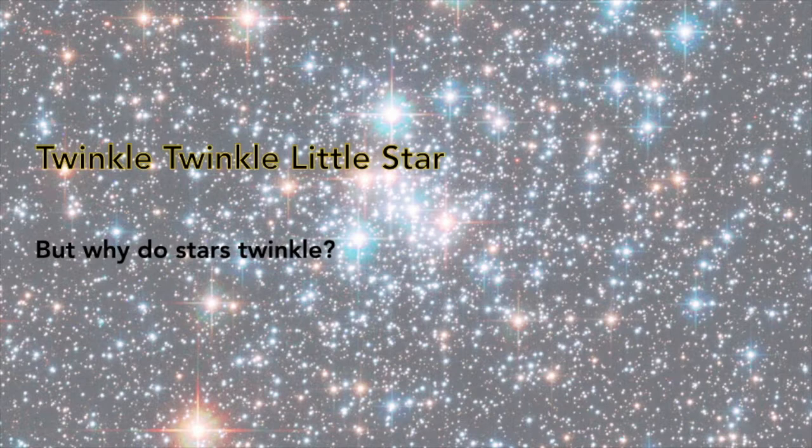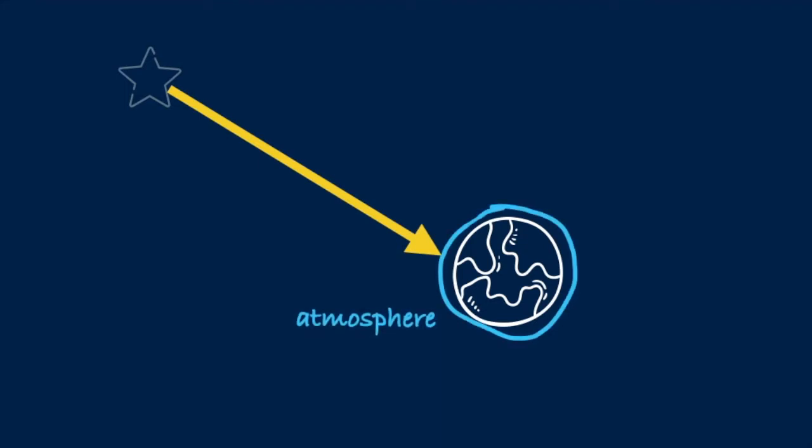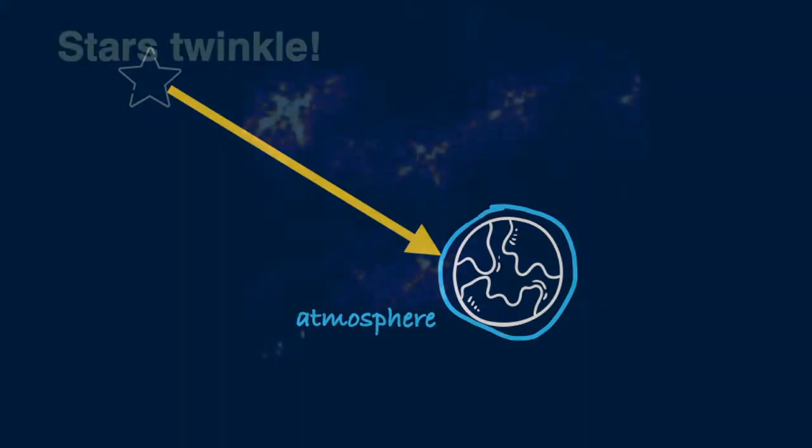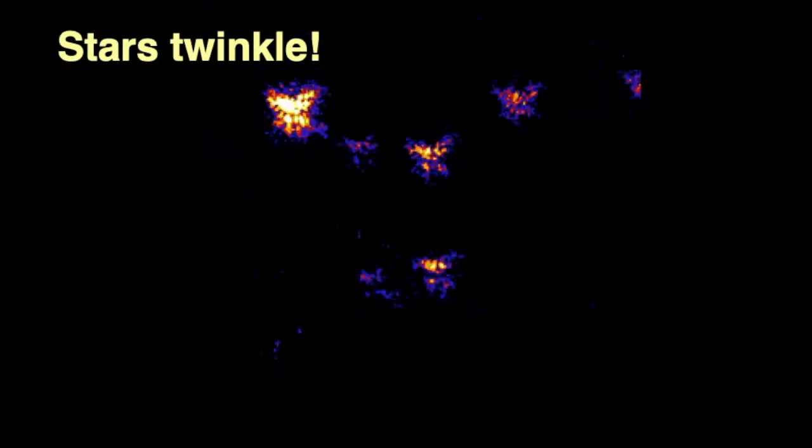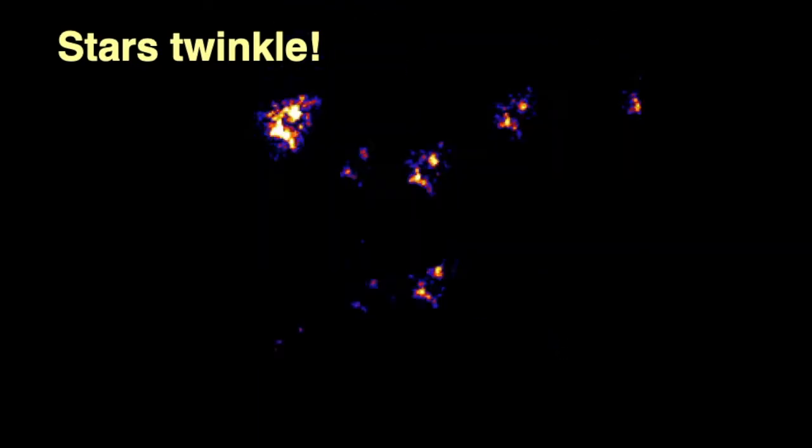That is because when the starlight travels for many decades, or in most cases for thousands of years to reach the telescope on Earth, it has to go through the Earth's atmosphere right at the end of its journey. What does the atmosphere do? The light bends and bumps through the different layers of atmosphere, distorting the light before it enters the telescope. The hot and cold layers of air are always moving, the bending of the light keeps changing, which causes the starlight to twinkle.